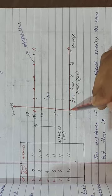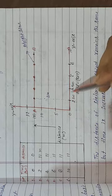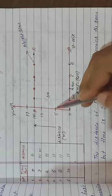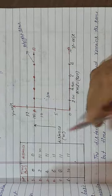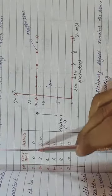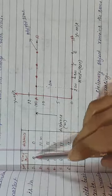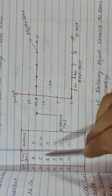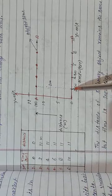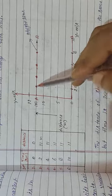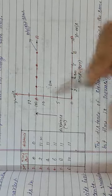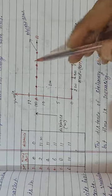We mark the axes: zero seconds at zero distance. Time values along x-axis: 0, 2, 4, 6, 8, 10 seconds. Distance values on y-axis: 0, 5, 10, 12. From the table, at zero seconds distance is zero; at two seconds distance is 11 meters; at four seconds distance is 11 meters; at six seconds distance is also 11 meters.